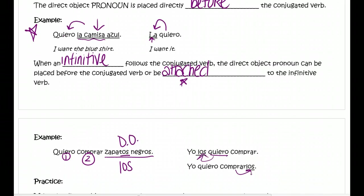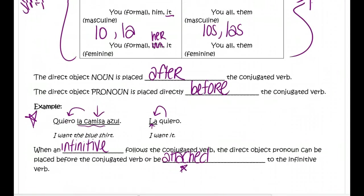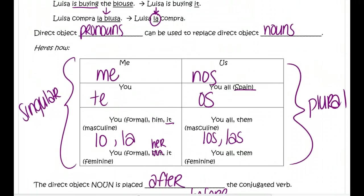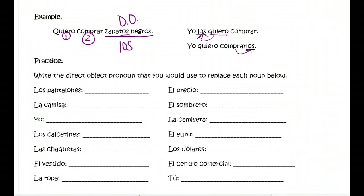For your homework assignment to accompany these notes, I want you to complete the section below. Write in the direct object pronoun that you would use if you wanted to replace the given nouns. Look up at the chart — me, te, lo, la, nos, os, los, or las — and figure out which of those eight direct object pronouns you would use to replace each word.